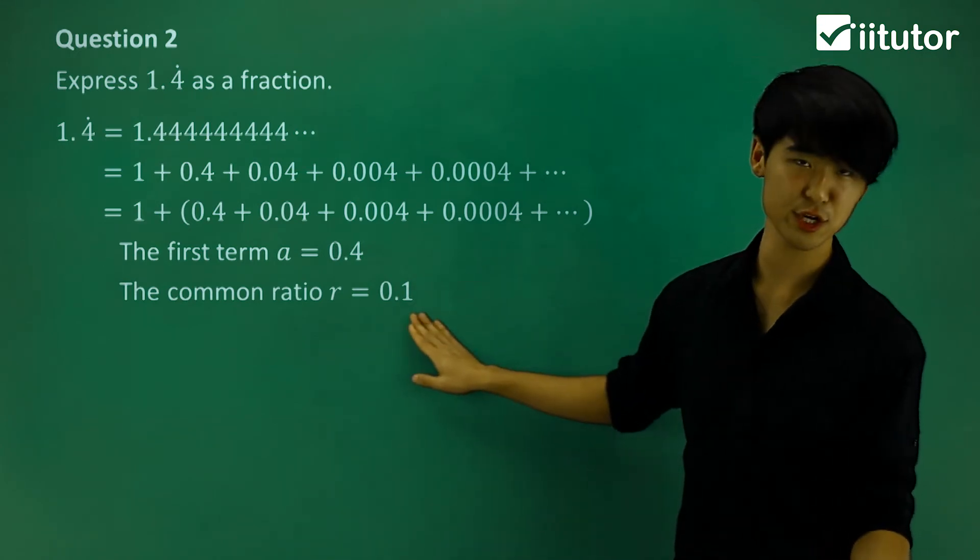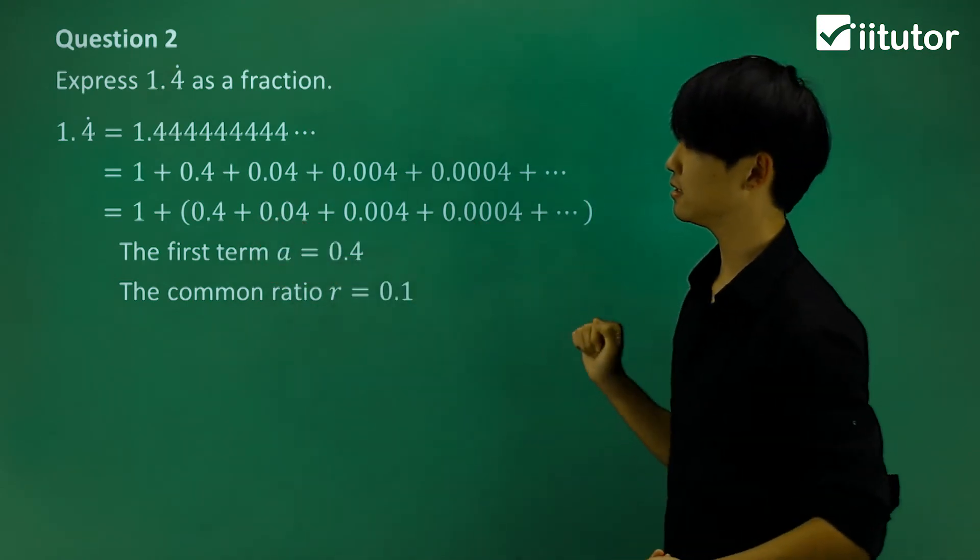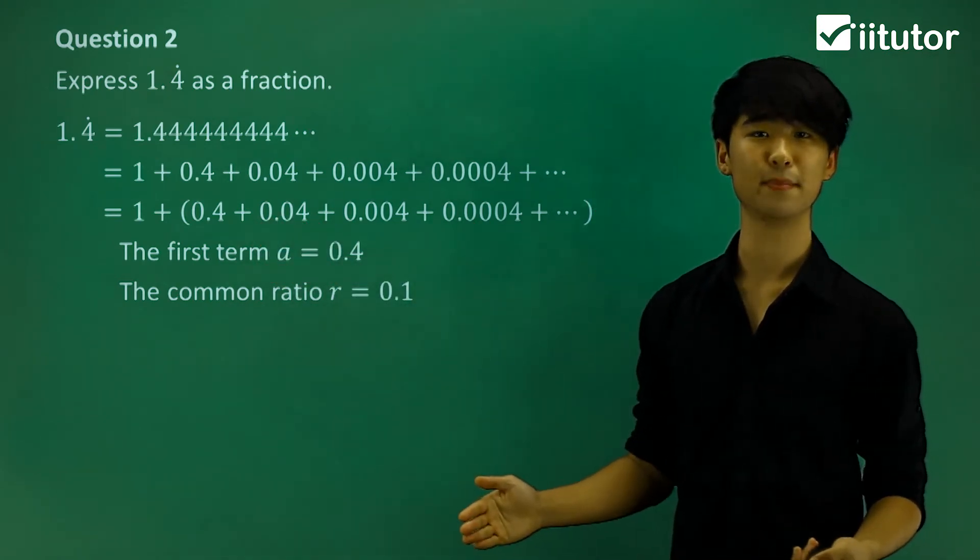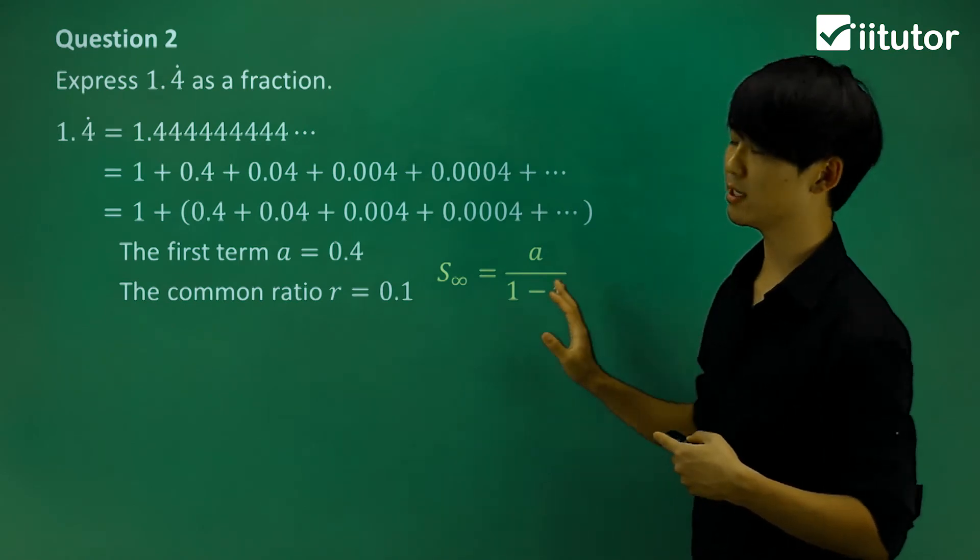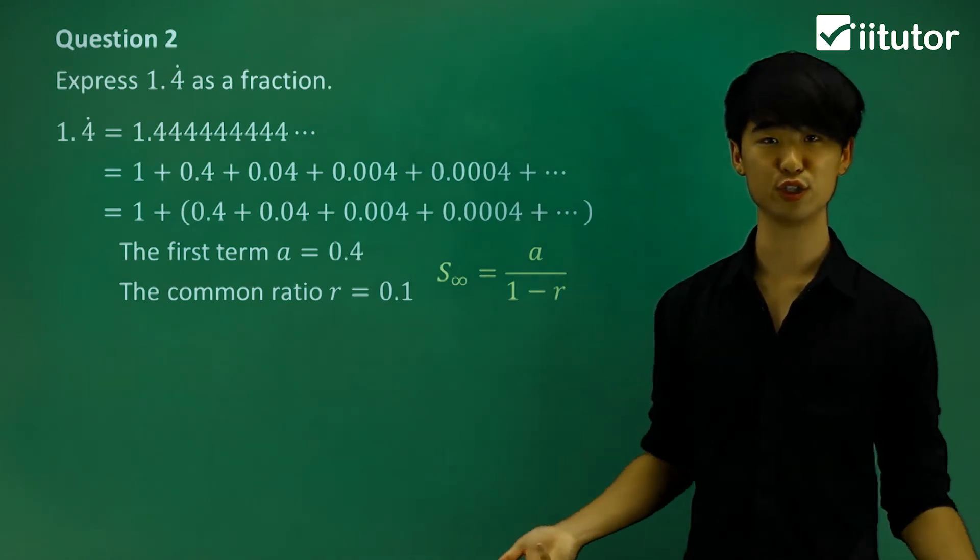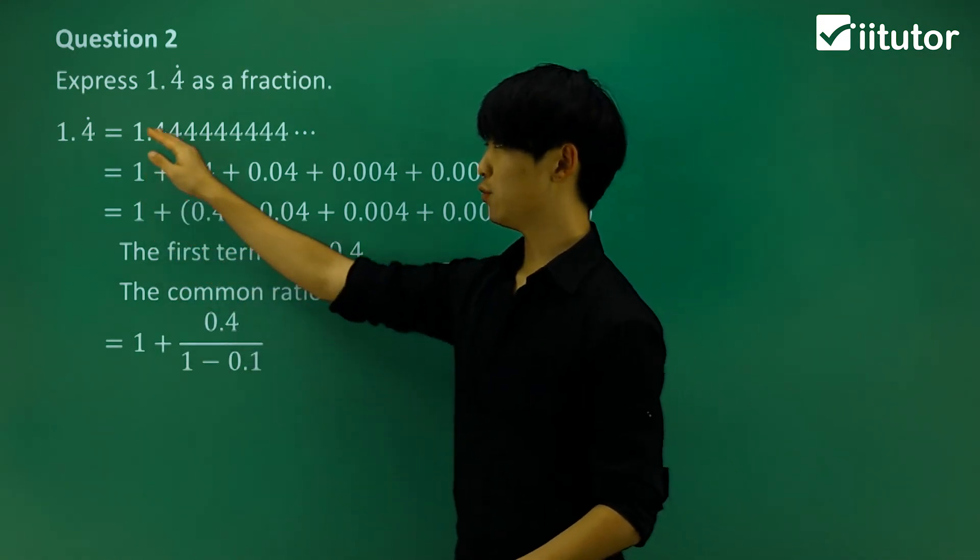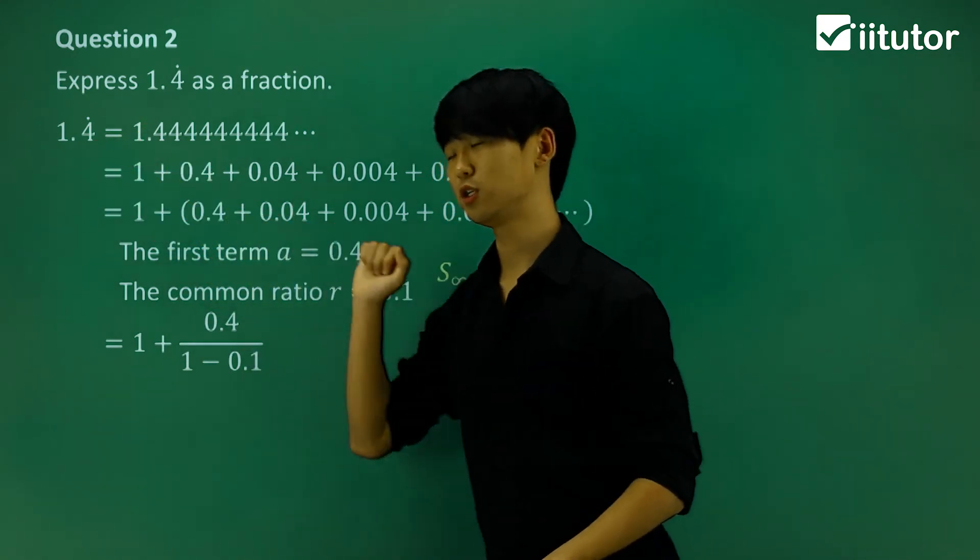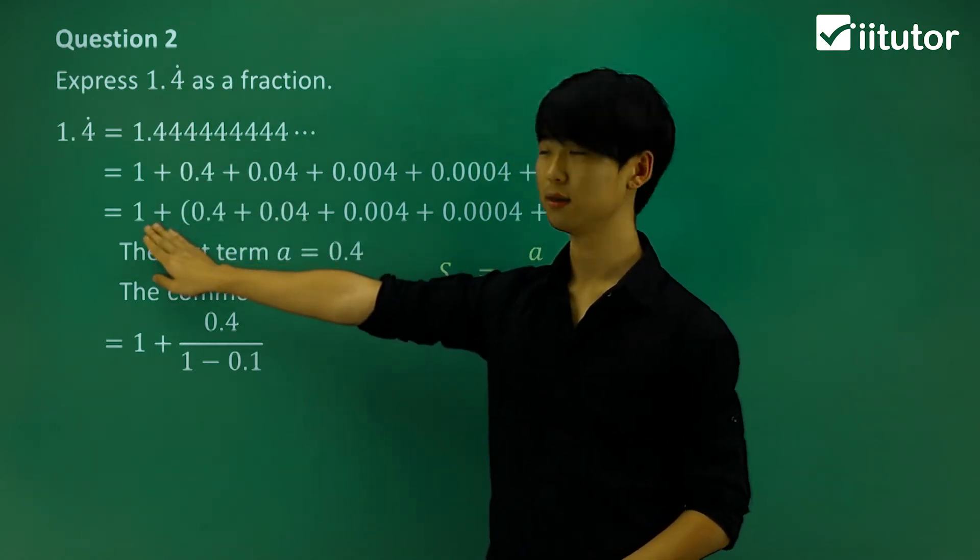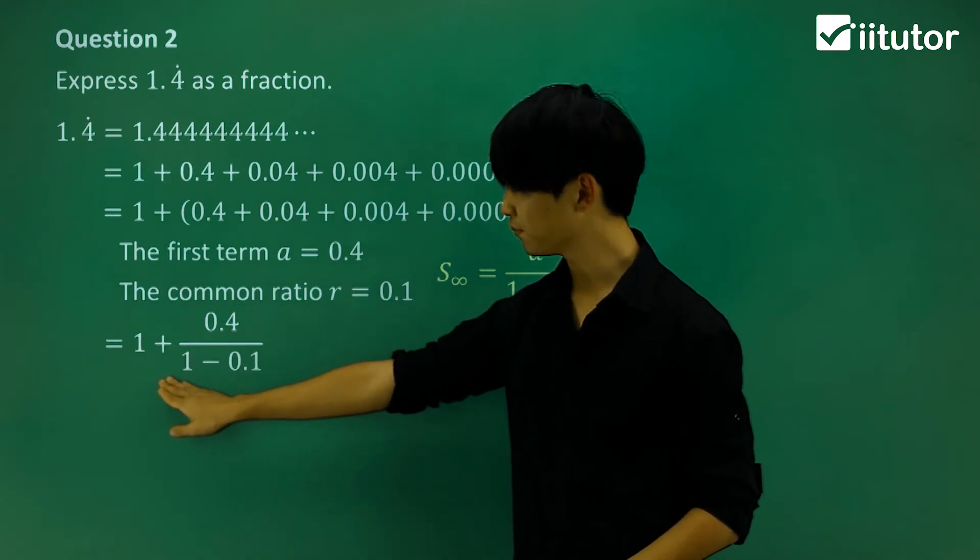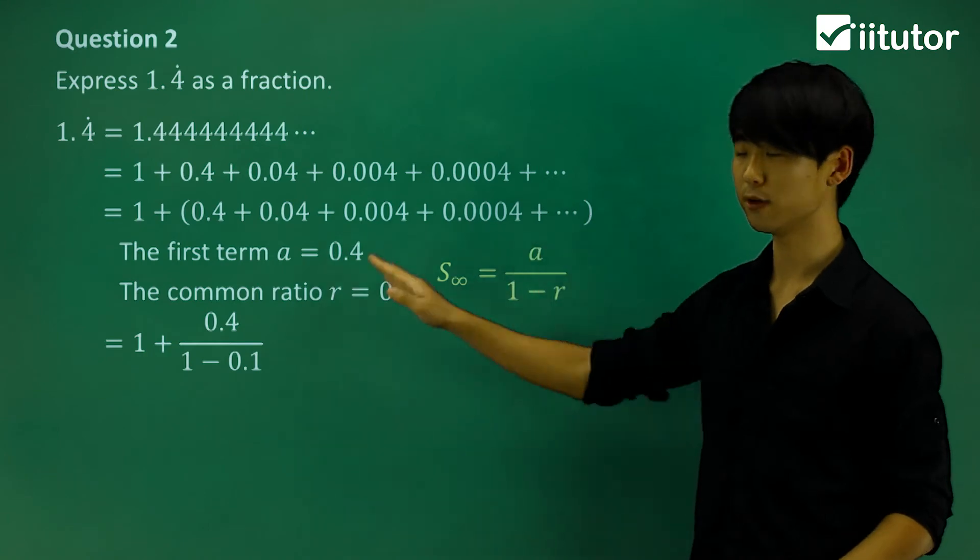Common ratio is less than 1 or in between negative 1 and 1. So this has a limiting sum, which means we can use my limiting sum formula. So let's try and do that, subbing in all my values into my formula. And don't forget, we want to still answer the question for 1.4 recurring. We can't forget that 1. Keep the 1, and that's the limiting sum for the bracket there. So don't forget the 1.